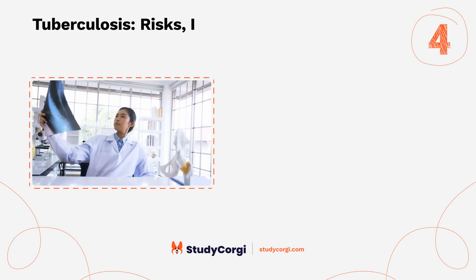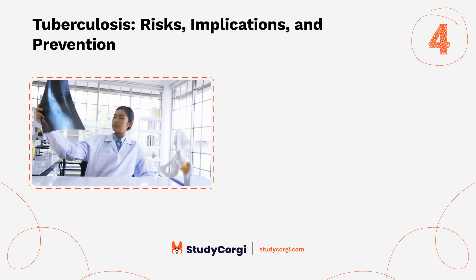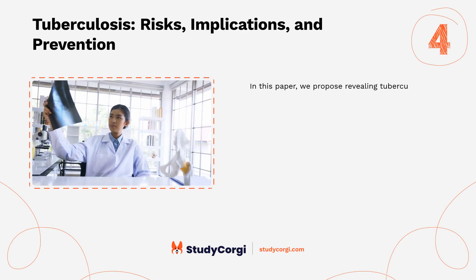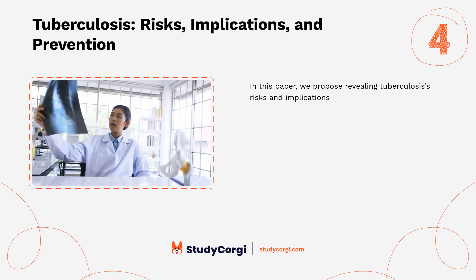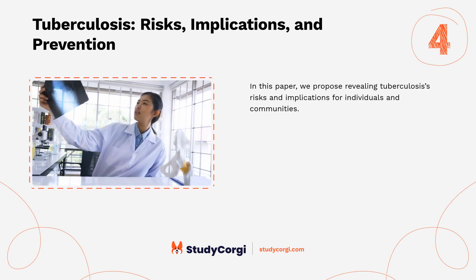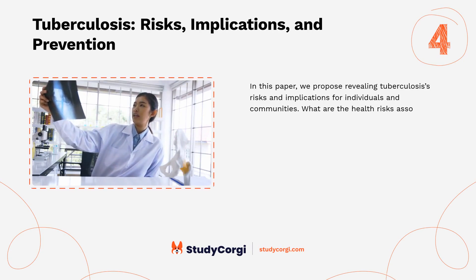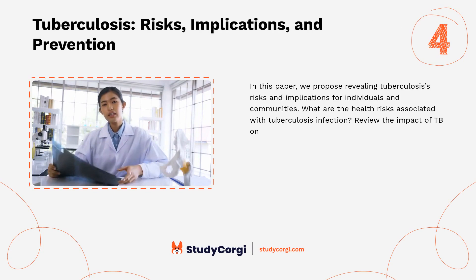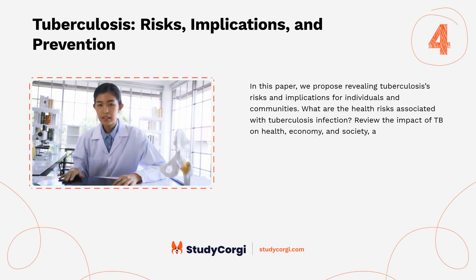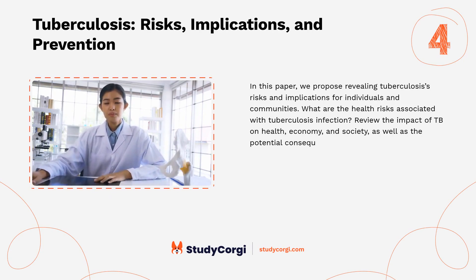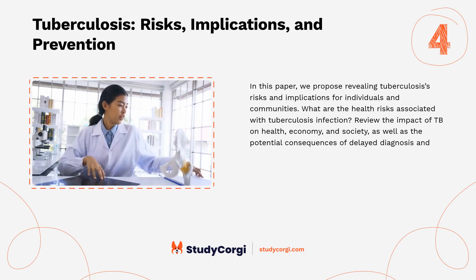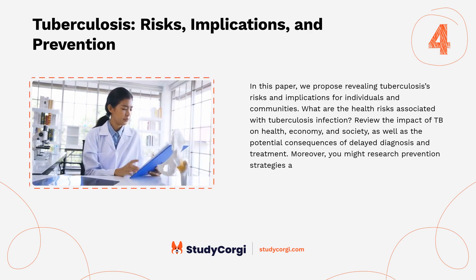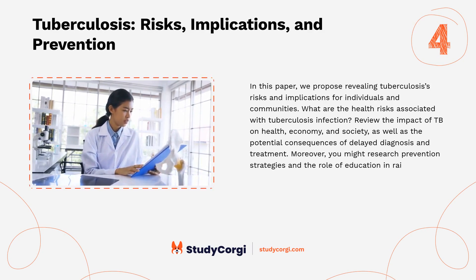Tuberculosis, Risks, Implications, and Prevention: In this paper, we propose revealing tuberculosis' risks and implications for individuals and communities. What are the health risks associated with tuberculosis infection? Review the impact of TB on health, economy, and society, as well as the potential consequences of delayed diagnosis and treatment. Moreover, you might research prevention strategies and the role of education in raising awareness.